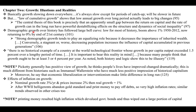Looking at demographic growth, it has followed a large bell curve over history — low for most of history, with a boom above one percent between 1950 and 2012, but now demographic growth is returning to zero by the end of the 21st century. He says strong demographic growth tends to play an equalizing role because it decreases the importance of inherited wealth. Conversely, a stagnant or decreasing population increases the influence of capital accumulated in previous generations.